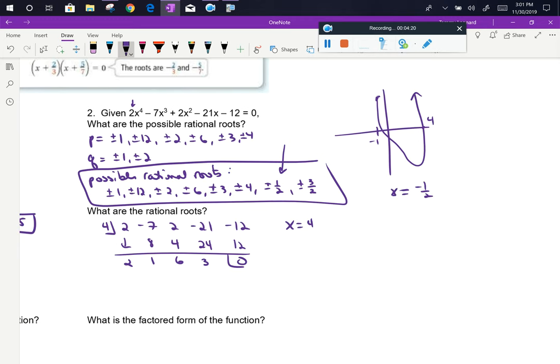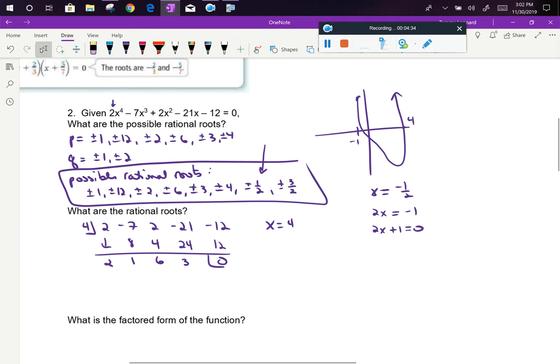So if I'm thinking about this, if x could maybe equal negative a half, if I multiply both sides by 2 I get 2x equals negative 1 and solving for 0 I have 2x plus 1 equals 0. So I'm going to try long division with 2x plus 1.